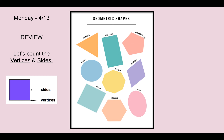If we look at our pentagon, remember a pentagon has one, two, three, four, five sides. Now let's count the vertices: one, two, three, four, five.